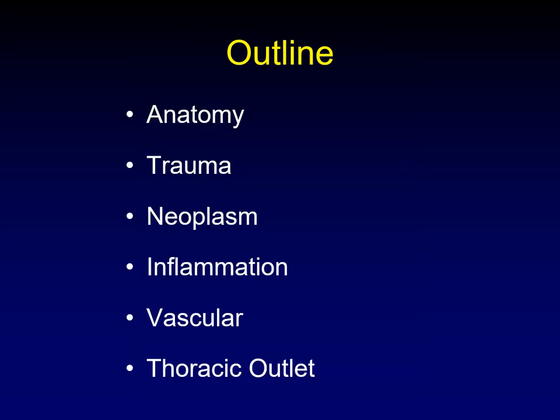We'll start with the anatomy of the brachial plexus. The examples of pathology will be categorized as trauma, neoplasm, inflammation, vascular, and then a special discussion of thoracic outlet syndrome.